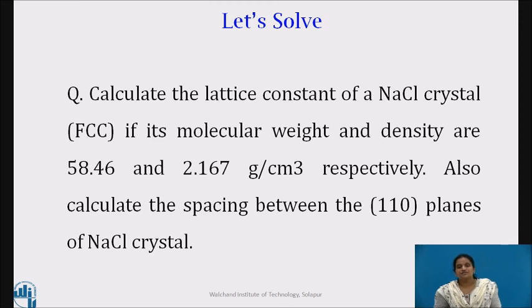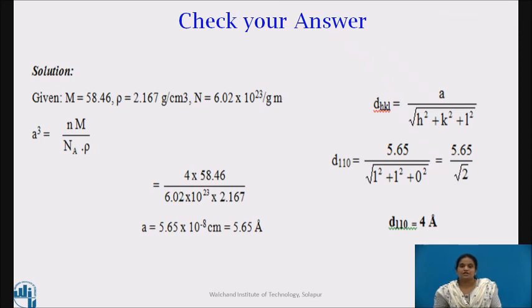Please pause the video and solve it. Check your answer students. For calculating the interplanar distance, first we have to calculate lattice constant A which comes to be equal to 5.65 angstrom unit. And D for 110 plane will be 4 angstrom unit.